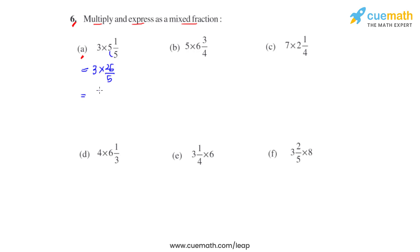Multiplying these two gives us the product as 78 over 5. When we divide 78 by 5, we get the quotient as 15 and the remainder as 3, so the mixed fraction for this will be 15 and 3 fifths.